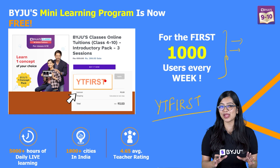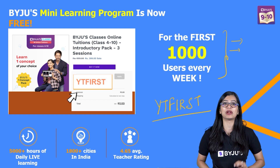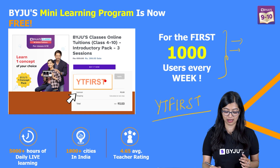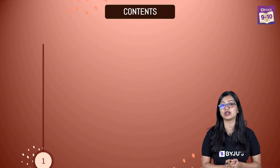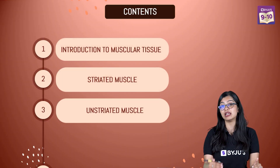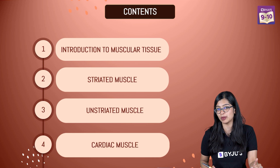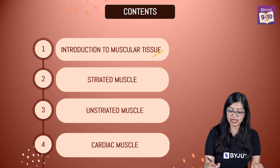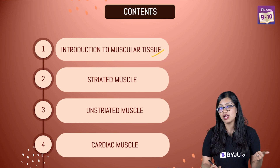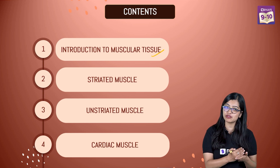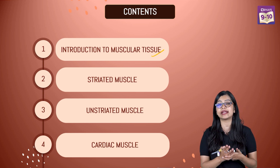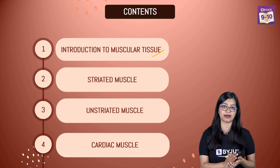Without wasting any more time, let's get started with the class on muscular tissue. Here's a quick topic list of what we'll be covering: what muscular tissues are, then the types of muscular tissue — which includes striated, unstriated, and cardiac muscles.